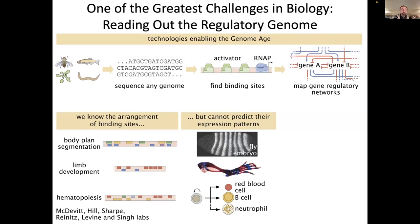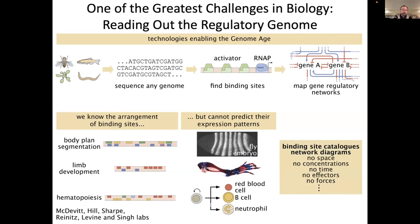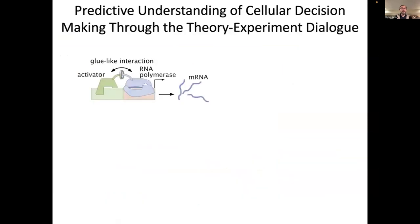you cannot use this knowledge of binding sites and network connections in order to predict cellular decision-making and pattern formation. What I'm going to try to convince you today is that collecting these maps of connections and binding sites is not enough to reach a predictive understanding of cellular decision-making, and that instead we need to augment our knowledge to include information about space, time, concentrations, effectors, and forces.